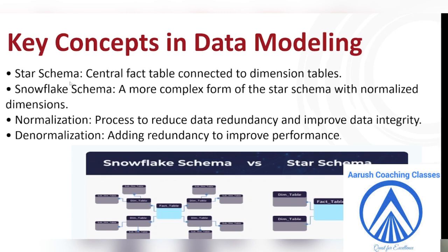I think now you have understood what do I mean by star schema — the central fact table connected to the dimension tables. Whenever a table is in the center, it is a fact table, and we have different dimensions. Like, suppose there is a house — that is the basic, the fact table — and what all dimensions we have: floor area, terrace area, bedroom. Different dimensions of it. Snowflake, as I told you, is more complex and with normalized dimensions.